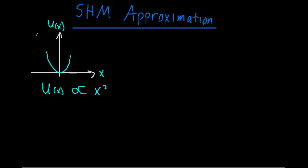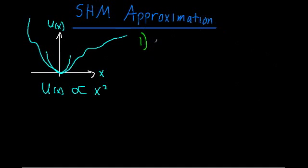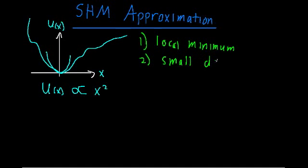Most of the time you'll see really nasty or really complex potential energy curves that won't be represented with a simple parabola. But the important thing is we can still get simple harmonic motion out of this by approximating this complex potential energy curve as a parabola in the region that matters. In order to do that, we're going to require two conditions: the first is that it must have a local minimum, and the second is that the displacements about this local minimum must be small.